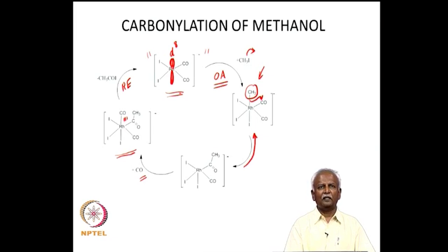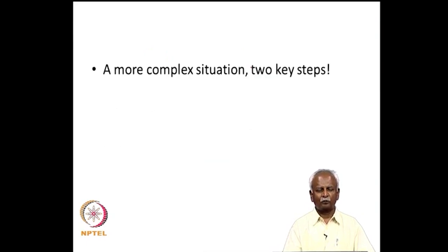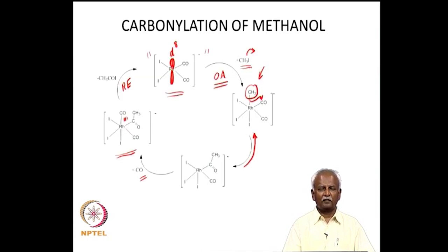Acetyl iodide is converted to hydroiodic acid and acetic acid, and the hydroiodic acid converts methanol to methyl iodide, completing the cycle. Essentially, we have converted methanol to acetic acid. This catalytic cycle is the simplest of the carbonylation reactions — involving only one oxidative addition, an insertion process, and a reductive elimination.